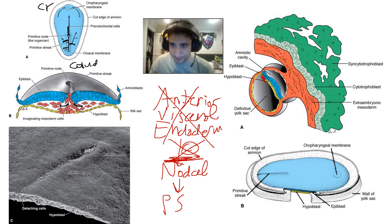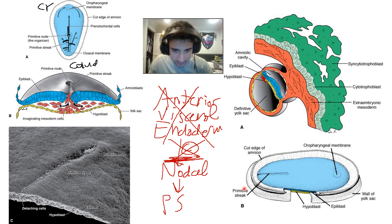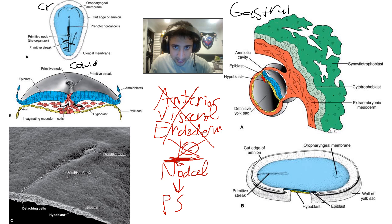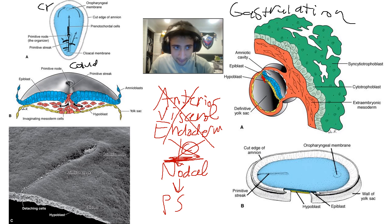If we look inside the amniotic cavity from above, we can see the oropharyngeal membrane. Here is the bilaminar disc with the hypoblast underneath. This process — converting the bilaminar disc into a trilaminar disc — is called gastrulation. The oropharyngeal membrane becomes the oral cavity, and the cloacal membrane becomes the anus.